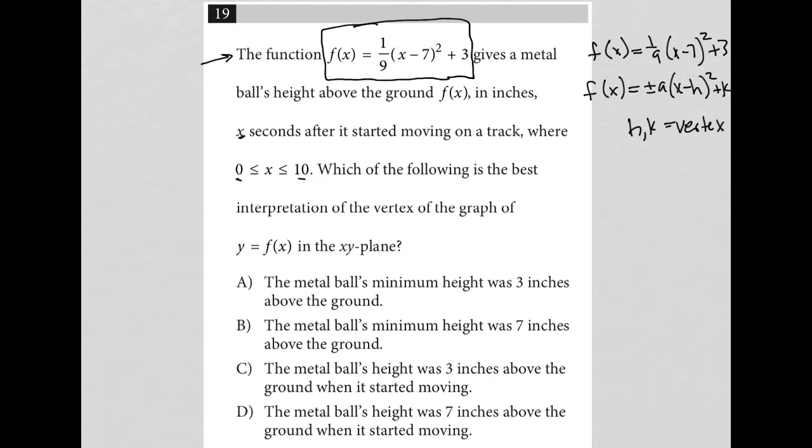What that tells us is that our vertex is at seven comma three. X is equal to seven, y is equal to three. Because x equals seven, that means it's been seven seconds at which point we have our vertex.